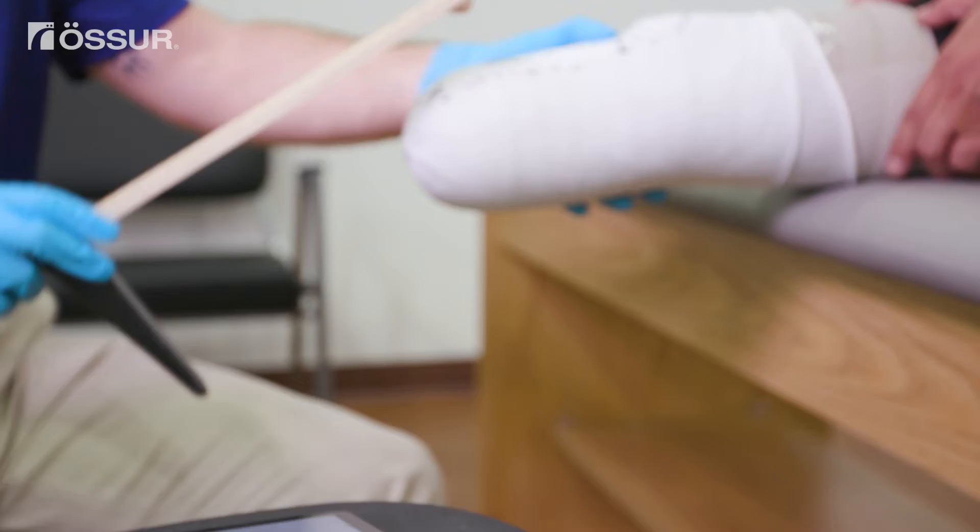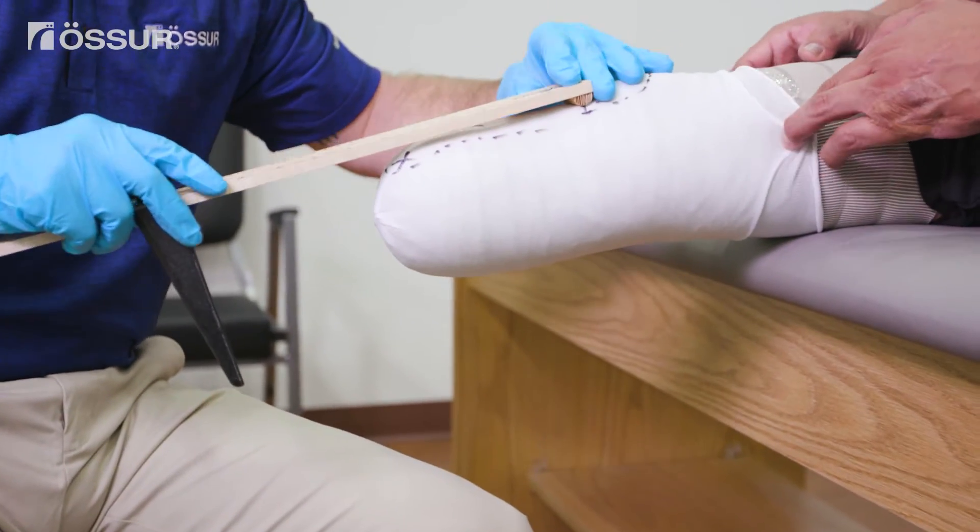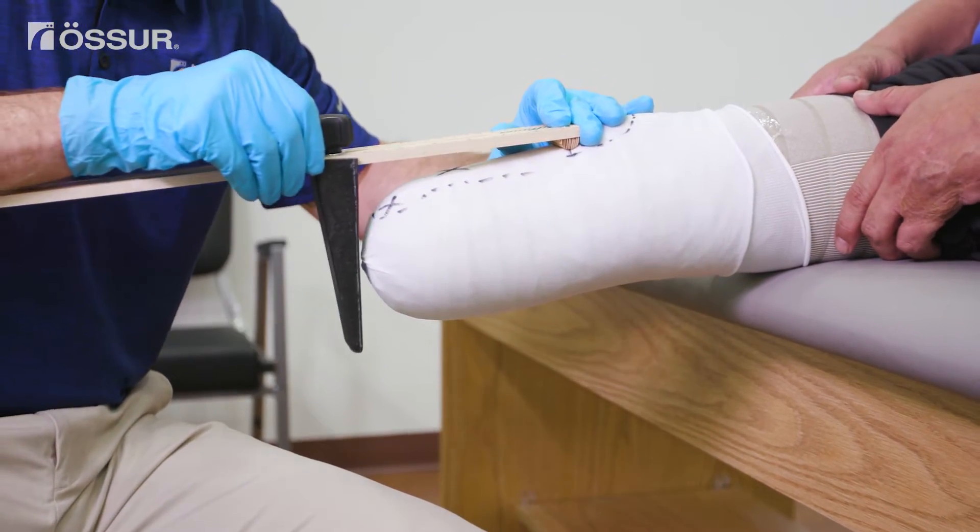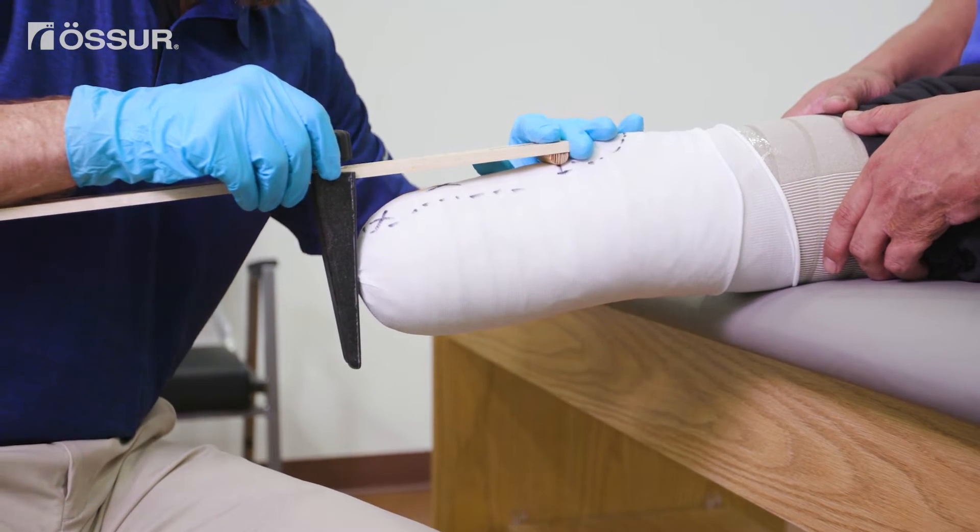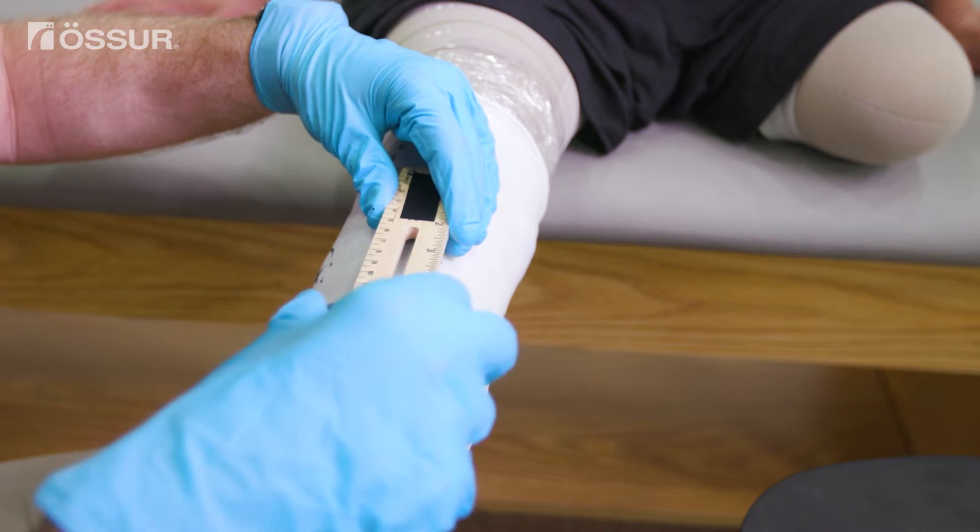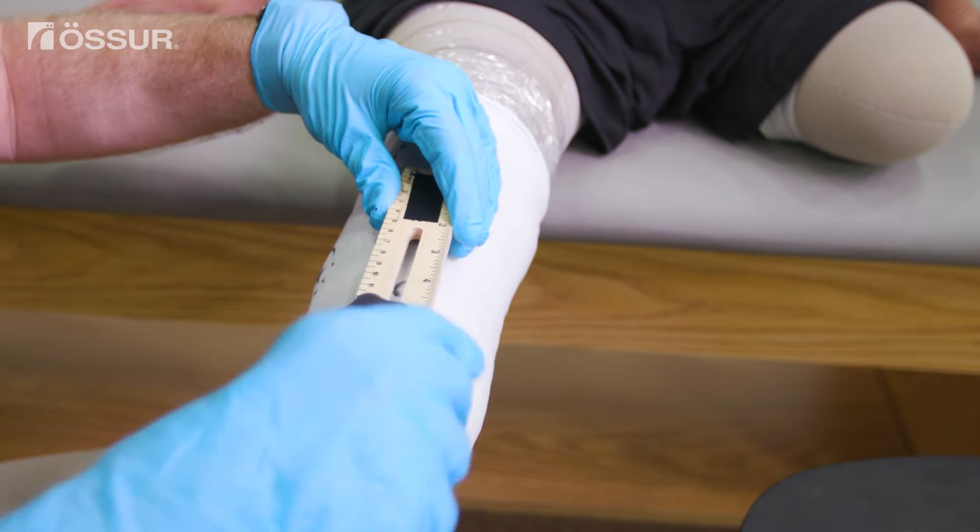Let's start by measuring the length of the residual limb. Using a length gauge or hard measurement stick, first place one end of the length gauge even with the mid-patellar tendon. Then measure down to a point even with the distal end without compression.